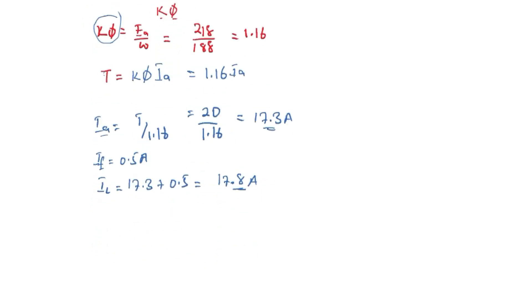Now we are trying to obtain the speed at this value of armature current. So we say EA, the terminal voltage minus the drop across the armature, this is 220 minus, remember IA here is 17.3, multiplied by the armature resistance. So this is going to be 216.5 volts.